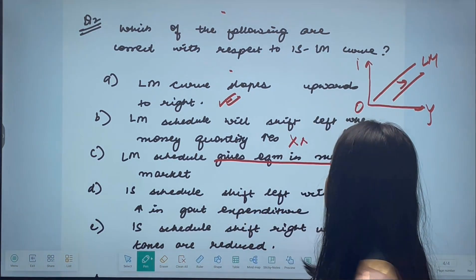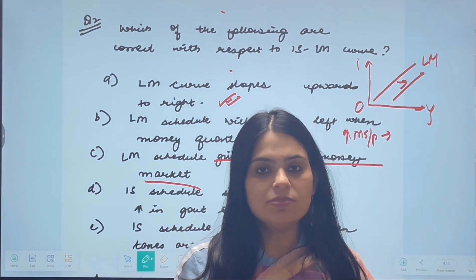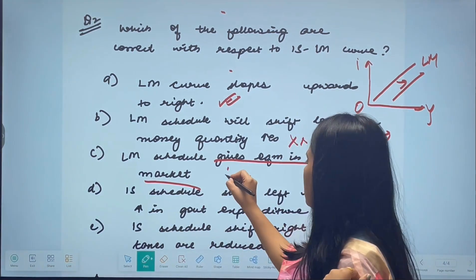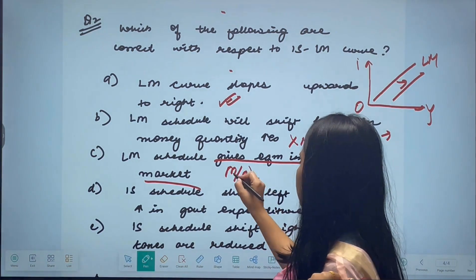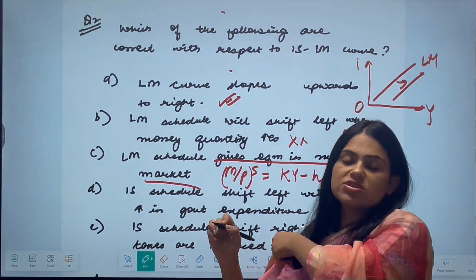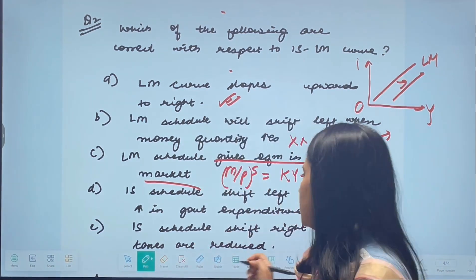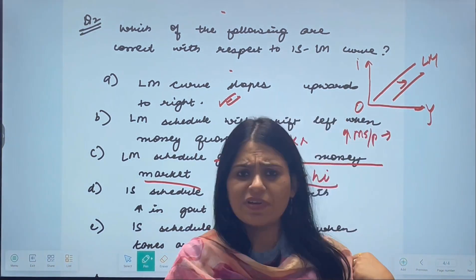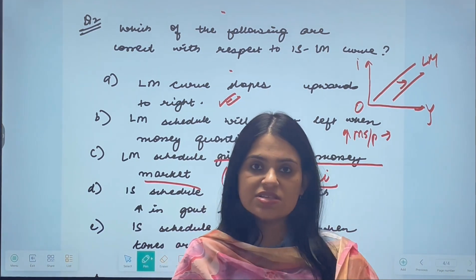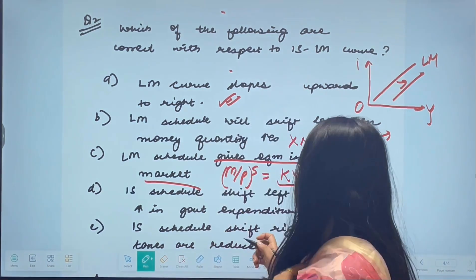The third option says the LM curve schedule gives equilibrium in the money market. This is correct — the LM curve shows money market equilibrium. We can express this as: money supply equals ky minus hi, which represents the demand for money. The demand for money arises from various reasons like transactional demand and speculative demand, and we equate it to the supply of money.